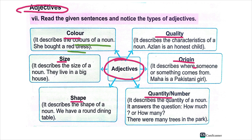Adjective of quality: these describe the characteristic of a noun. For example, 'he is an honest child.' Here 'honest' describes the character and is the adjective of quality.